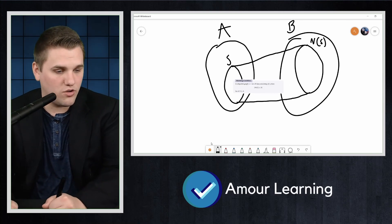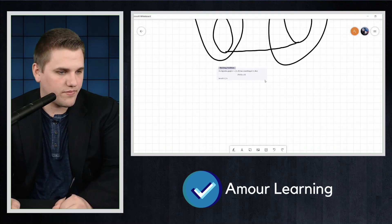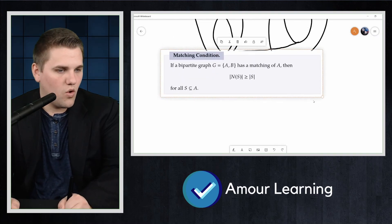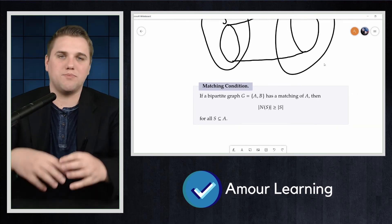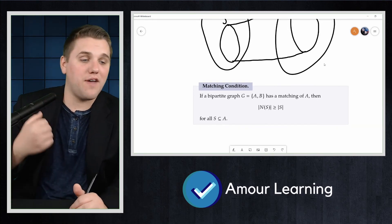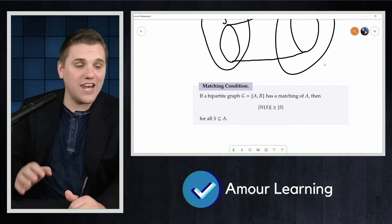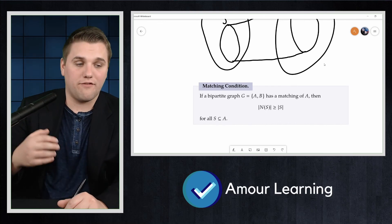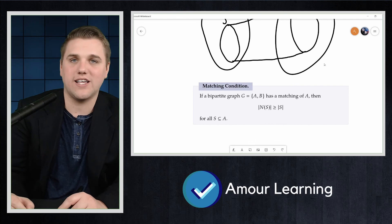Our discussion can be summarized as follows. And this is the big important conclusion that we've discussed in this lecture. We have seen that if a bipartite graph G, which can be split up into two portions A and B, has a matching of A, then we know the neighborhood of any subset S from A has to be at least as large as the subset of S.